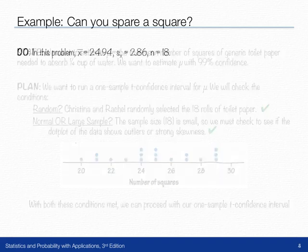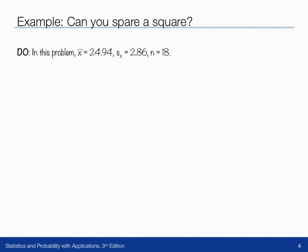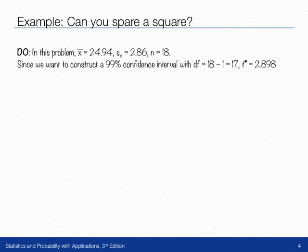After the plan stage, we actually want to do, that is, perform the confidence interval. We want to calculate it. In this problem, we have some information that we know. We know the sample mean x bar. We know the sample standard deviation, s. And we know the sample size was 18.